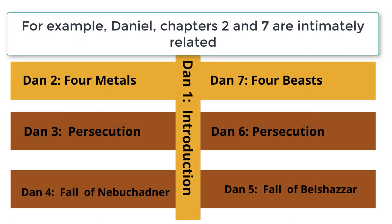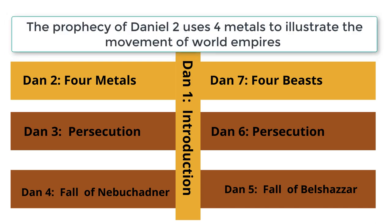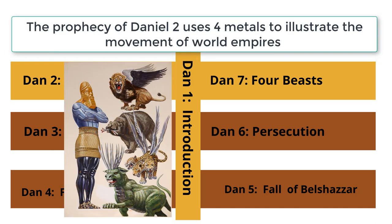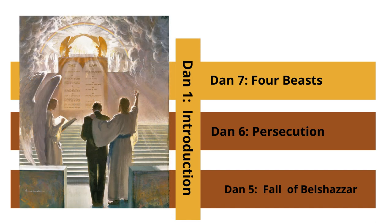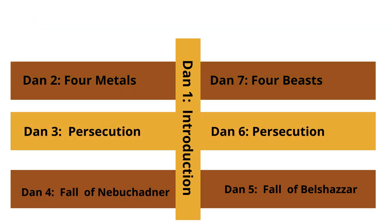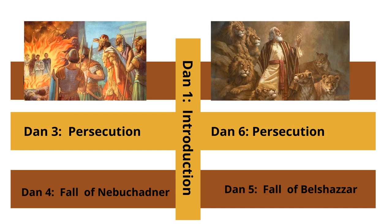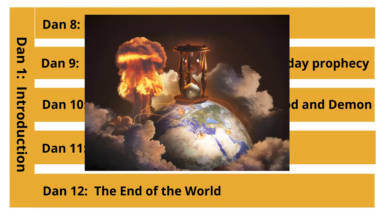For example, Daniel chapters 2 and 7 are intimately related. The prophecy of Daniel 2 uses four metals to illustrate the movement of world empires, and in Daniel 7, four beasts are used to provide more detail about each empire. Chapter 7 also introduces the judgment of mankind that occurs before the second coming of Jesus. Daniel chapters 3 and 6 deal with the persecution of God's people by civil powers. Please note that the persecution arises for religious reasons. This is a foreshadow of what will trigger persecution at the time of the end. Daniel 12 describes a time of trouble such as never has been since there was a nation — it will be so terrible it is beyond human imagination.